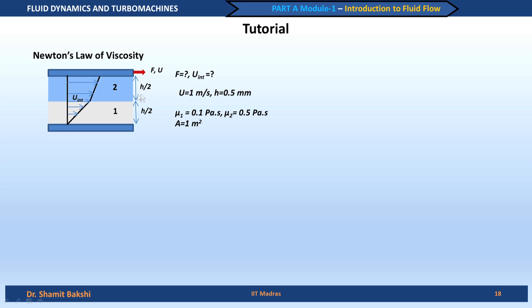Another thing to note is that the velocity profile — the velocity variation in the direction perpendicular to the plate — is not continuous because of the different viscosities of the fluids. So there is a change in the gradient of velocity at the interface. We also need to find the velocity at the interface, and it will become clear why there is a gradient discontinuity there.